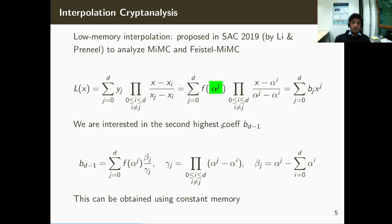To give an idea about low memory interpolation cryptanalysis: this idea was used at last year's SAC by Lee and Pernil to analyze two block ciphers called MIMC and Feistel-MIMC. Assuming familiarity with the interpolation method or Lagrange interpolation — the Lagrange interpolation polynomial can be expressed as L(X) equal to this somewhat complicated-looking sum, where the X_i's and Y_i's are obtained by evaluating the function you are trying to interpolate.